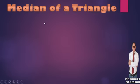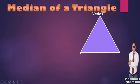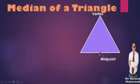First, we need to know the meaning of median of a triangle. If we have a triangle, this triangle has six elements. We have three lines, each called a side, and we have intersection points of two sides, each called a vertex. We have three vertices and three sides. Each side can be called the base. If we have a point at the middle of a side, this point is called the midpoint of that side.